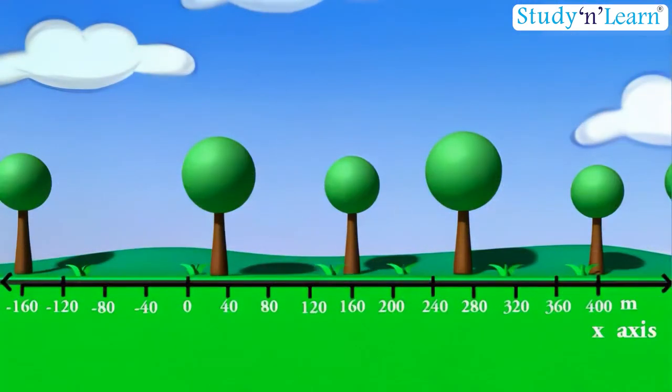To describe motion along a straight line, we can choose an axis, say X axis, so that it coincides with the path of the object. We then measure the position of the object with reference to a conveniently chosen origin, say O.